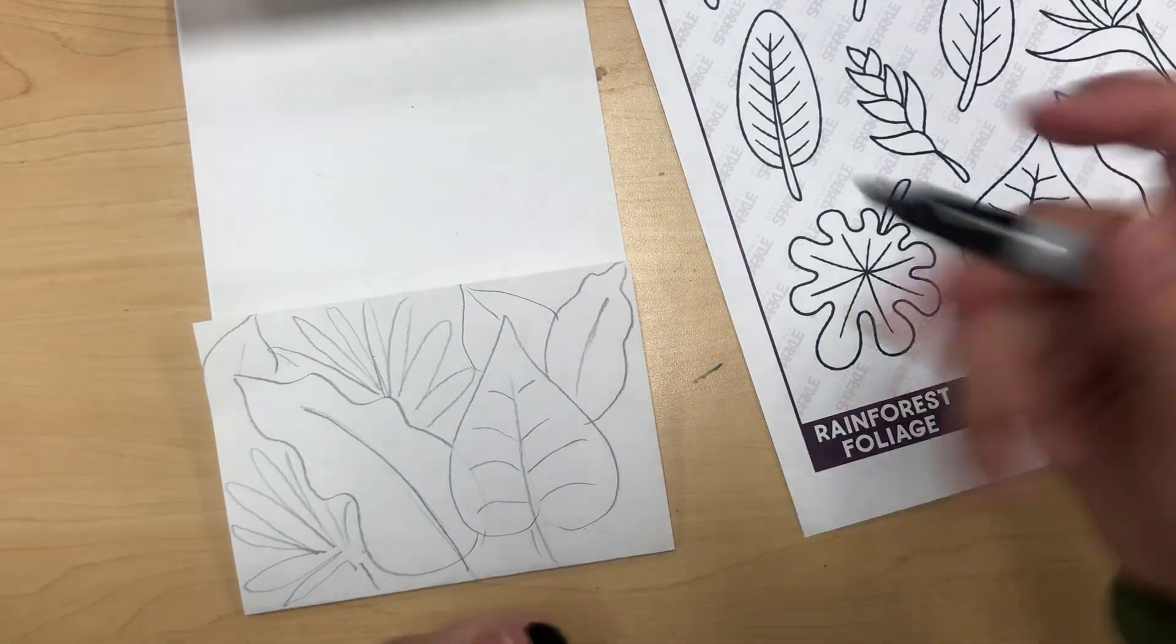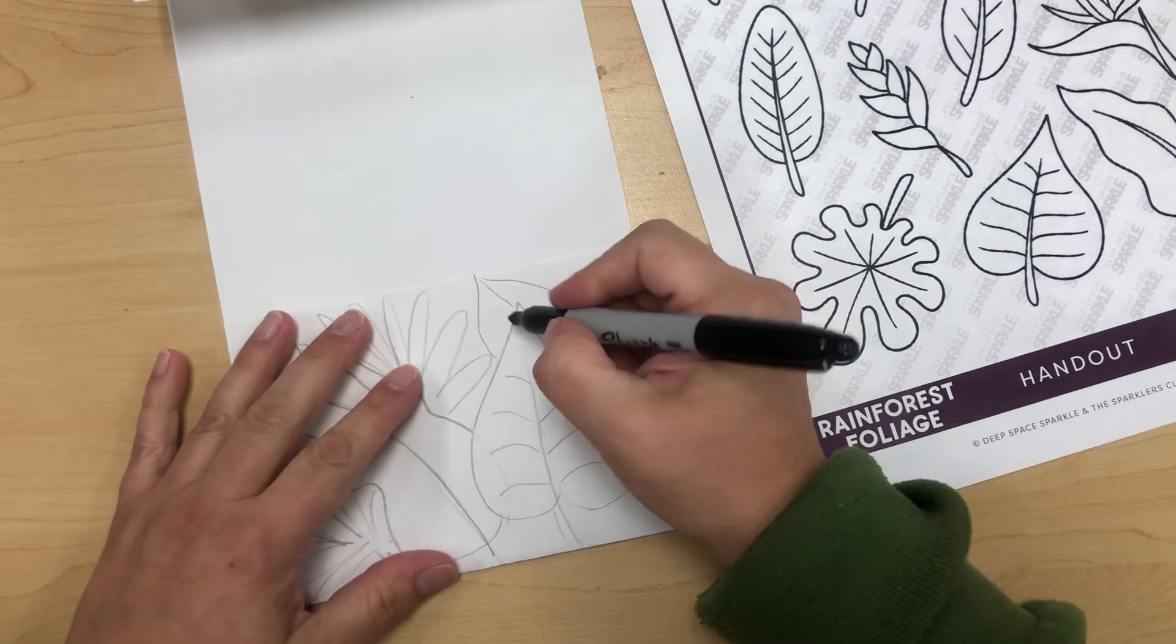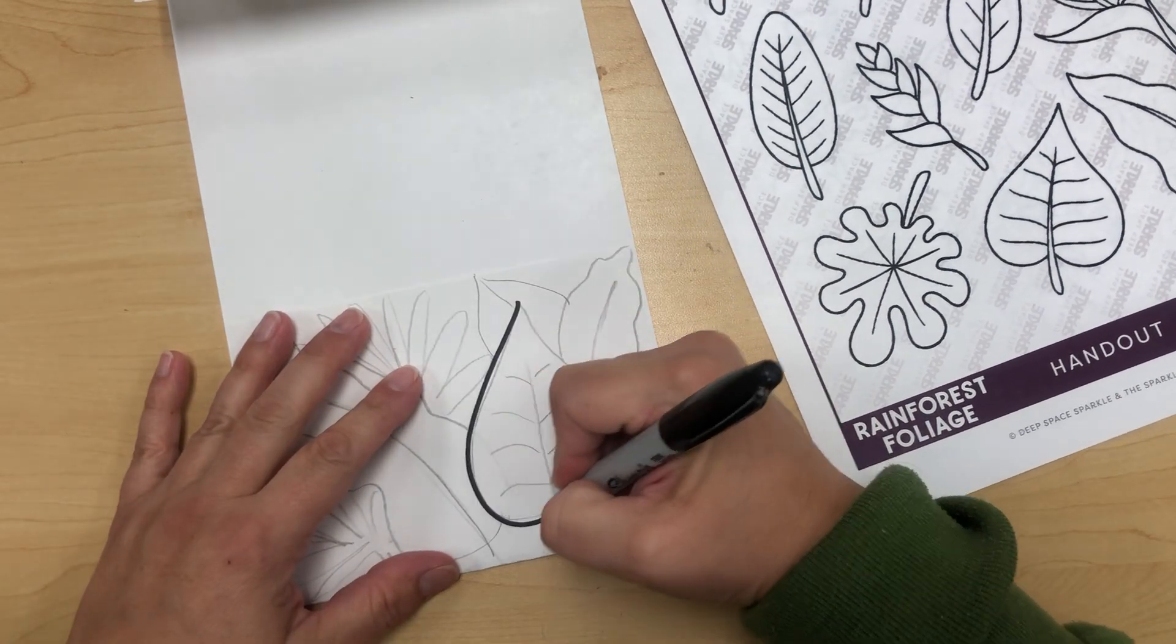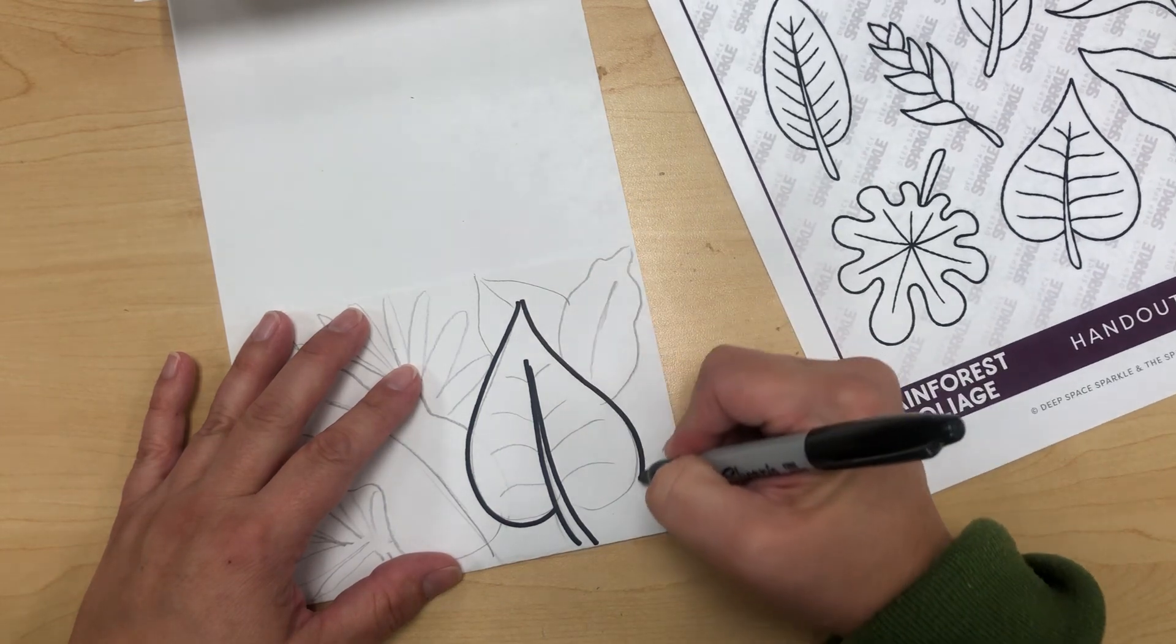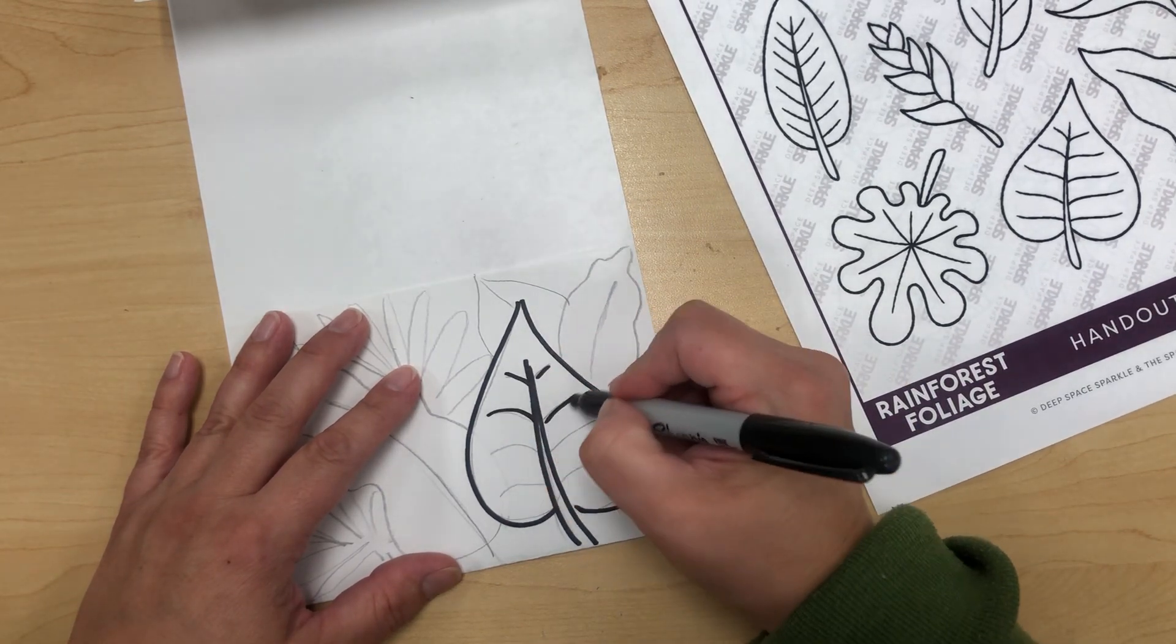Then you're going to take your sharpie and you're going to trace over all those leaves, and then eventually you will erase.